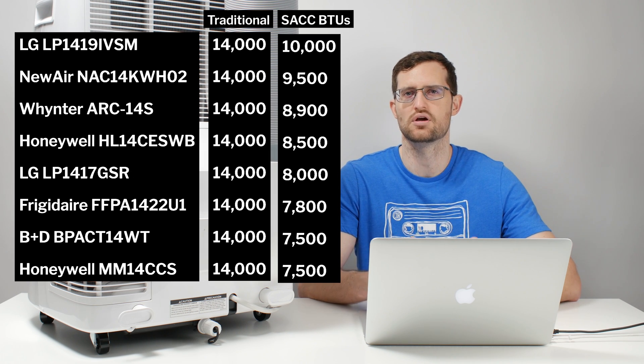So let's take a look at all of the 14,000 BTU units currently on the market and see how we can distinguish between those different models. So as we look at the list we have here in front of us, we see quite the range in seasonally adjusted cooling capacity. What you'll notice first of all is that the most efficient units are somewhere around 10,000 BTUs, 9,500 BTUs for the second most efficient unit.